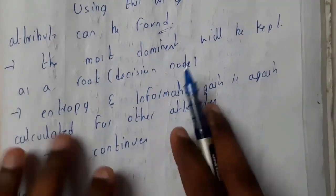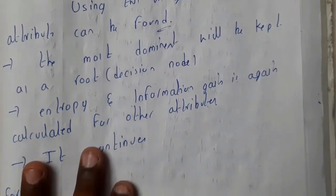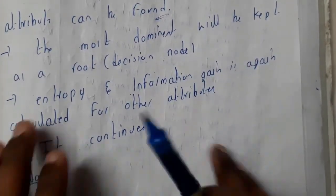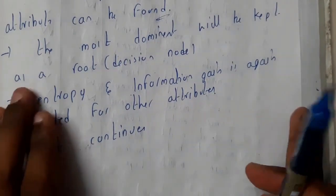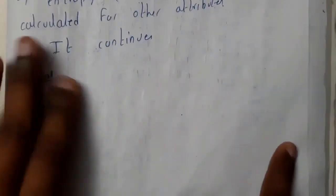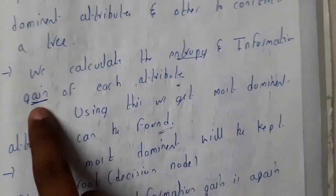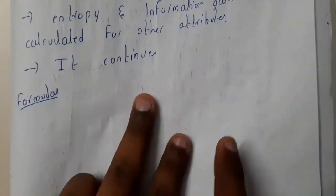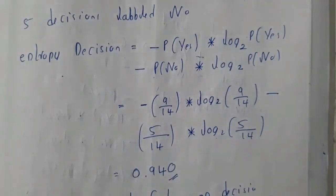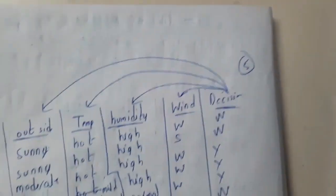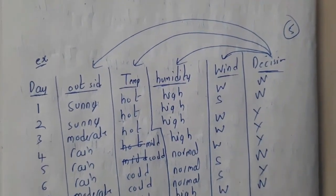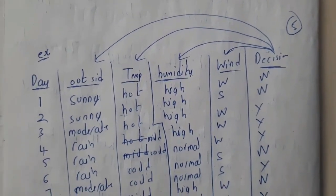The entropy and information gain are calculated for each and every node, and in that way you arrange the decision tree. We have two main formulas — entropy and gain. I haven't written them here because we will discuss the formulas in detail when we go through the problem, so that will be much clearer. In the next lecture we'll be going through a problem.